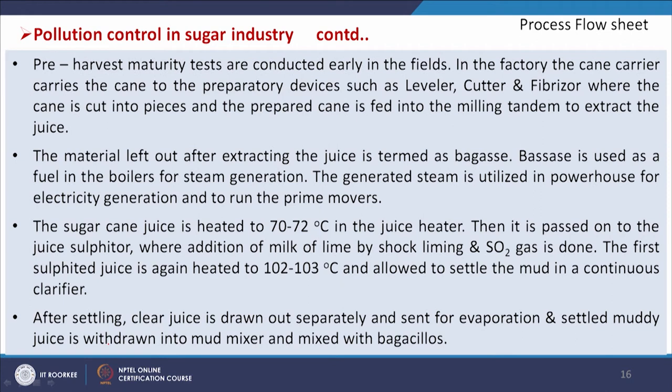Regarding the process description: pre-harvest maturity tests are conducted in the fields to determine whether the sugar content in the cane juice is sufficient before entering the plant. After harvesting, the cane is crushed, juice is extracted, and heated to 70–72°C in the juice heater, then passed to the juice sulphiter where milk of lime and SO2 gas are added by shock liming.